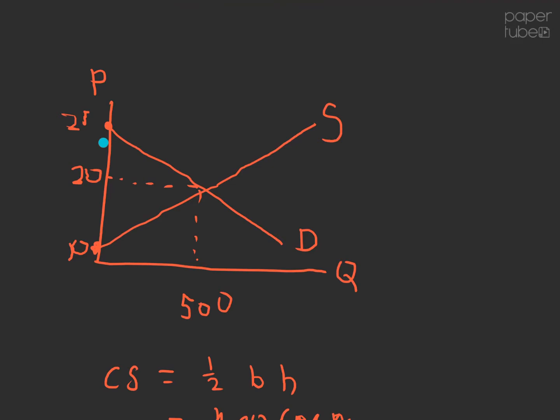We can shade in the consumer surplus on our diagram, and that's this area right here. Just so you can get a good visual, I'm going to shade in the area that represents consumer surplus. It is this triangle right here that's below the demand curve and above the price. So that's consumer surplus. We abbreviate that CS, and that area is $1,250.